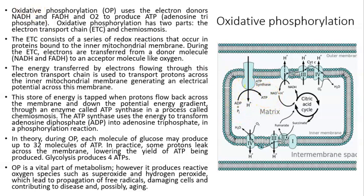In theory, during oxidative phosphorylation each molecule of glucose may produce up to 32 molecules of ATP; in practice, some protons leak across the membrane, lowering the ATP yield. Glycolysis produced a net of 2 ATPs. However, oxidative phosphorylation also produces reactive oxygen species such as superoxide and hydrogen peroxide, which lead to free radical propagation, damaging cells and contributing to disease and possibly aging.